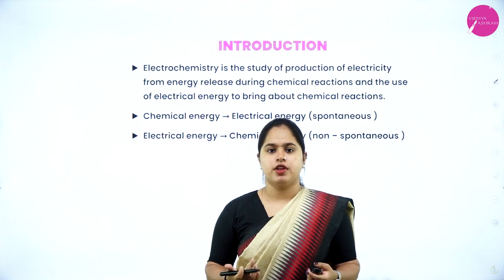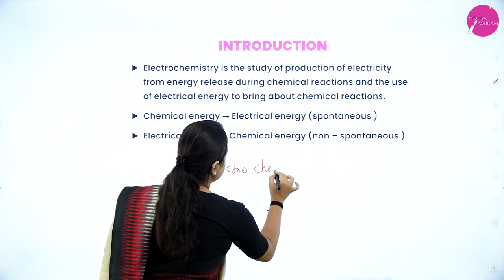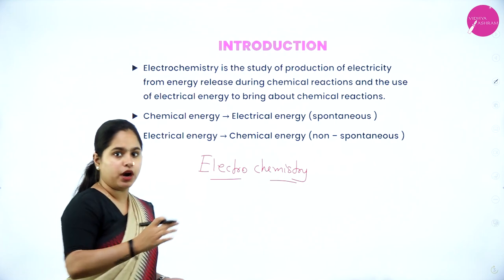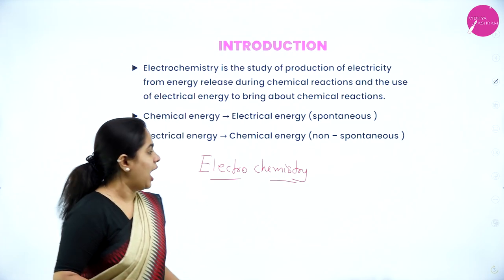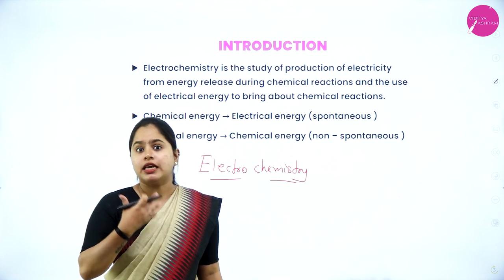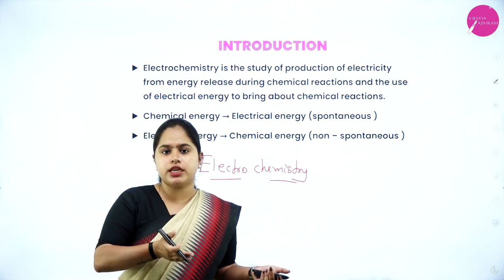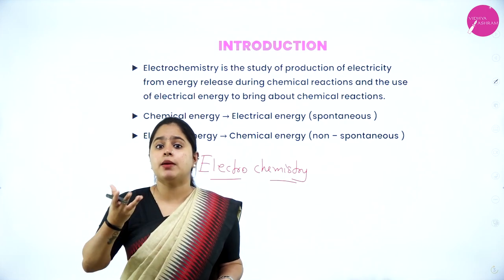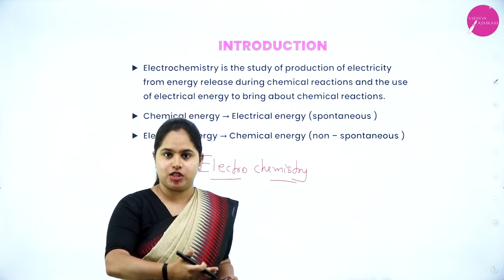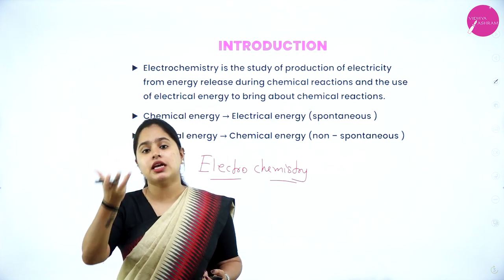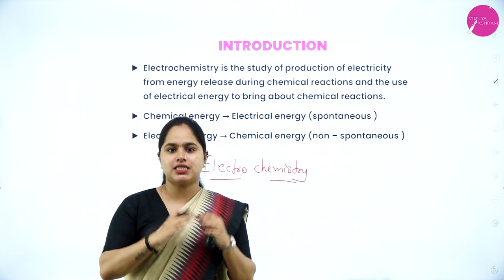Beginning with electrochemistry — from the name itself you can see two parts: electro and chemistry. Electro deals with electricity, and chemistry involves chemical reactions. So electrochemistry deals with the interconversion of electrical energy to chemical energy and vice versa — how from chemical reactions we can produce electrical energy, and how by supplying electrical energy, chemical reactions can take place.